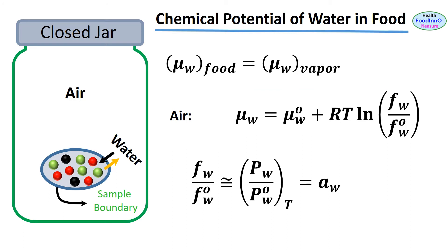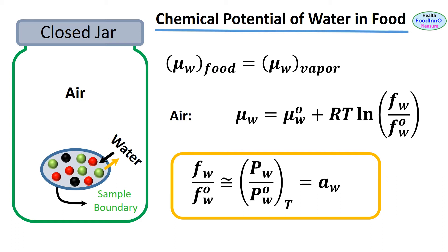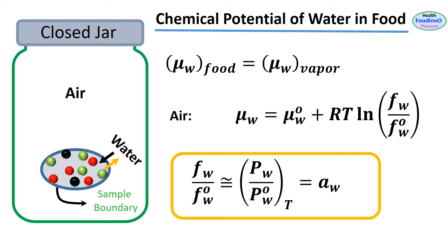For practical purposes, under most conditions in which foods are found, the fugacity is closely approximated by the vapor pressure. Therefore, Fw / Fw° = Pw / Pw° = Aw. The fugacity ratio is similar to the vapor pressure ratio and it is equal to water activity, defined as the ratio of the vapor pressure of water in food to the vapor pressure of pure water, at a constant temperature.